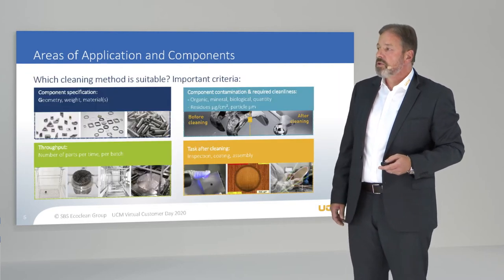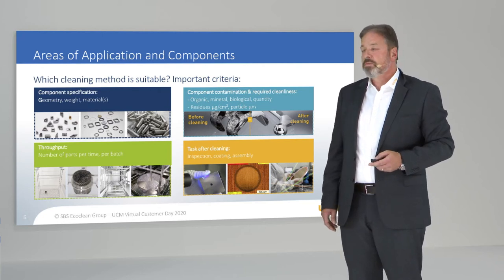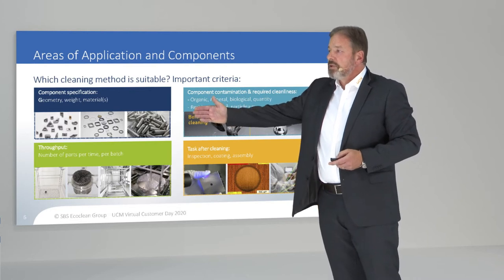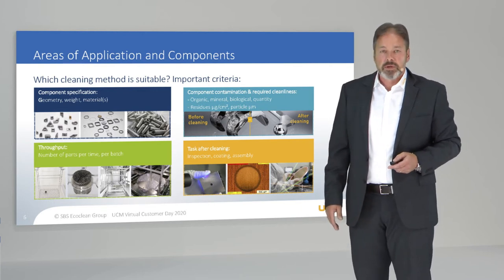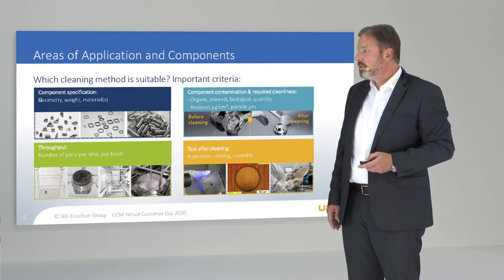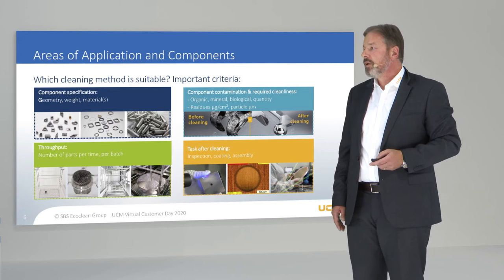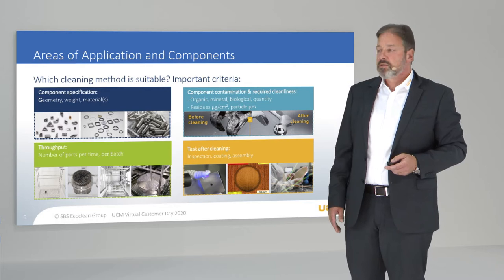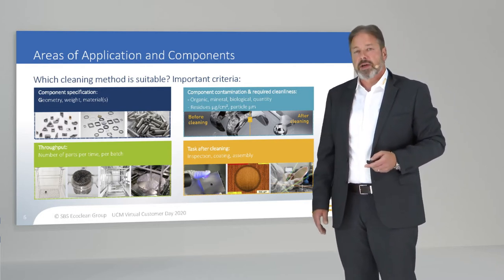Before we talk about the cleaning method, the most important criteria are to be clarified. This could be the component specification about the geometry, the weight, and the material or materials. Also very important is component contamination and requirement cleanliness — organic, mineral, biological quantity, residues in microgram per square centimeter, and particle in microgram.